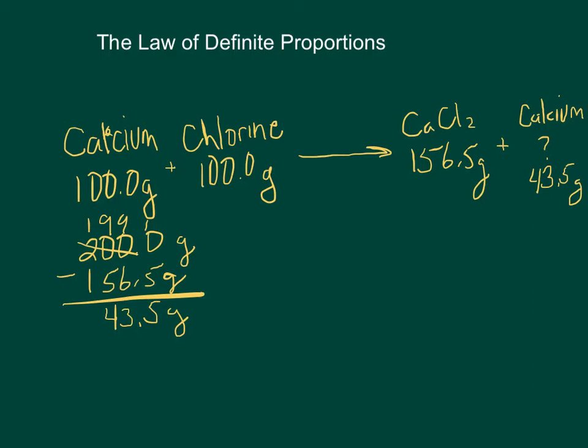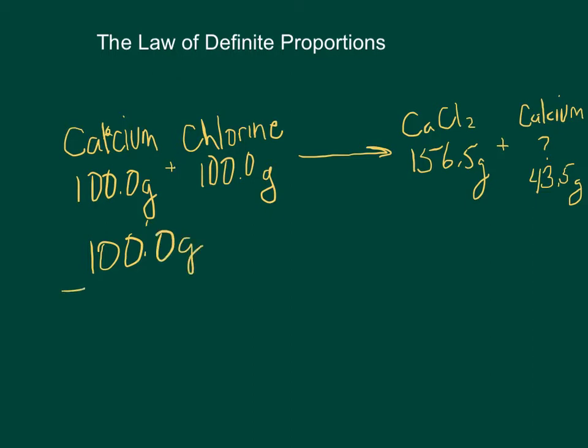Well, obviously, he has too much or else he wouldn't have any leftover. So, all I need to do is take that 100 grams of calcium minus the 43.5 grams and I will get 56.5 grams. So, instead of 100 grams of calcium, to make the perfect recipe, he should have 56.5 grams to start with.